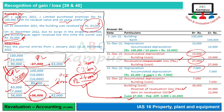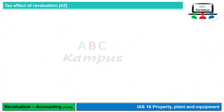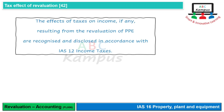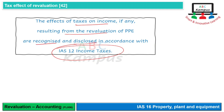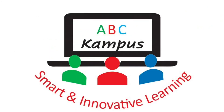Previous example में situation 1 और 2 cover हुई, इस example में situation 3 और 4 cover हुई - all four revaluation possibilities cover हो गई हैं। Tax effect of revaluation: IAS 16 के मुताबिक deal नहीं होता। Income taxes का जो effect होता है revaluation की वजह से, वो IAS 12 Income Taxes के मुताबिक recognize किया जाएगा। That's all for today।